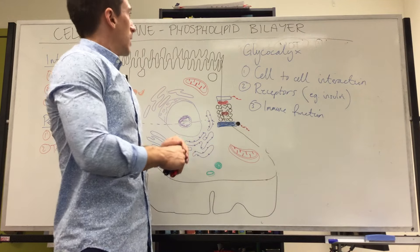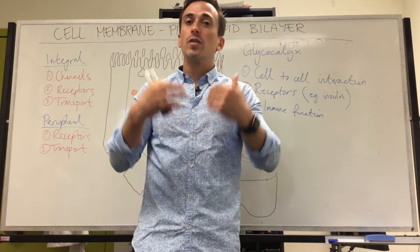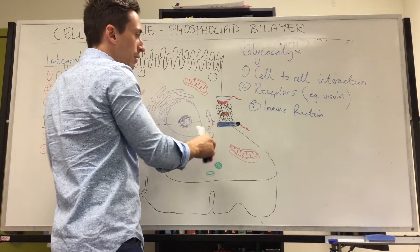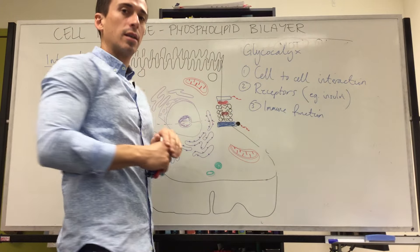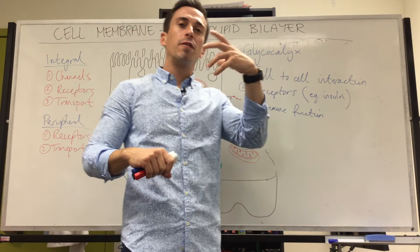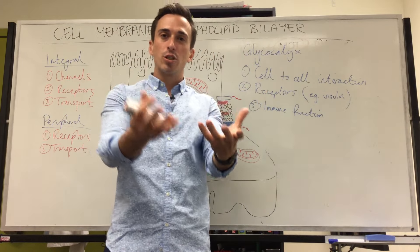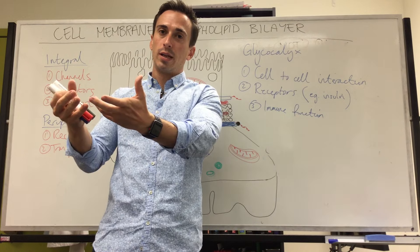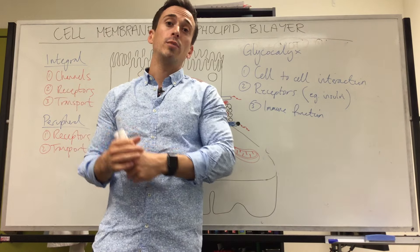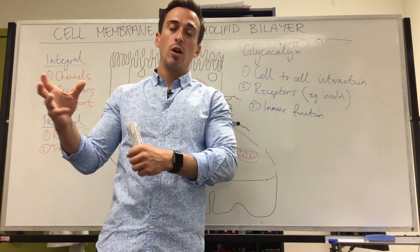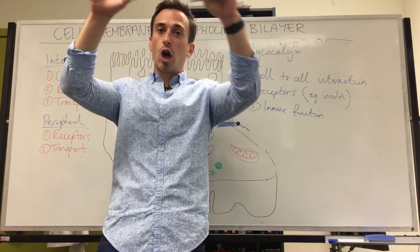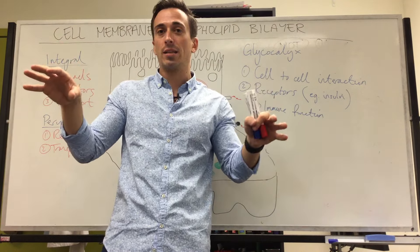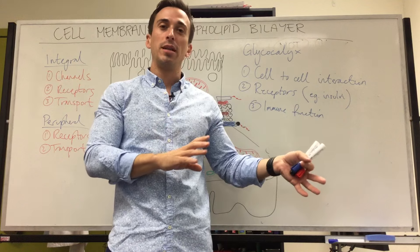So this is basically the phospholipid bilayer—the membrane that separates the inside of the cell from the outside of the cell. It's made up of phospholipids, cholesterol, integral proteins, peripheral proteins, and a lot of these proteins are glycoproteins, which forms this coating of sugar on the outside of the cell called the glycocalyx, which plays many different roles.